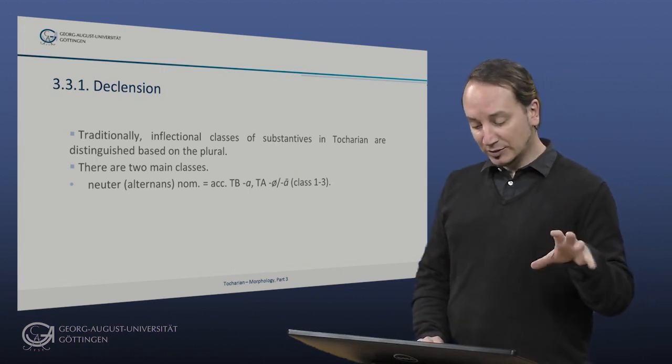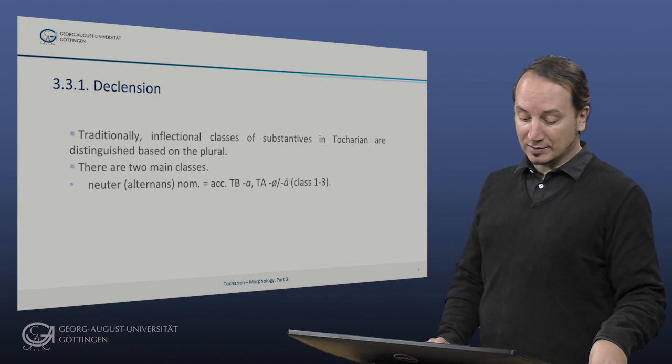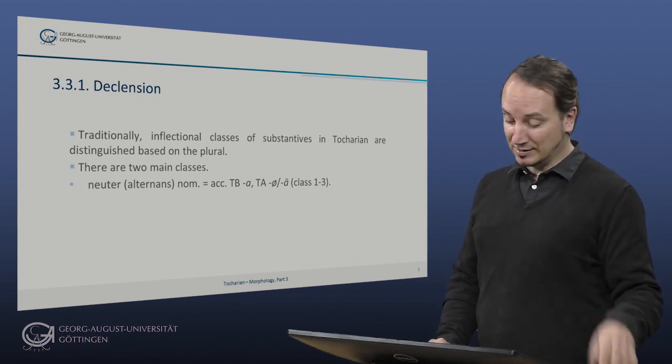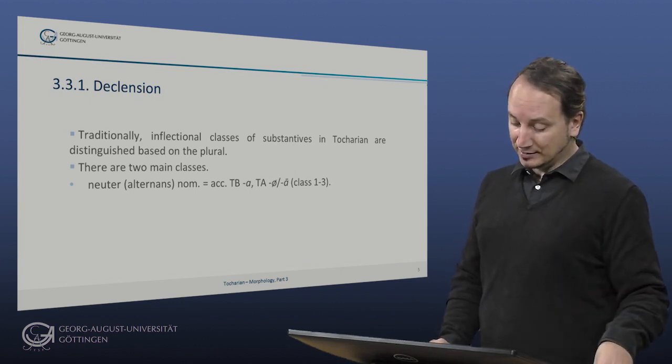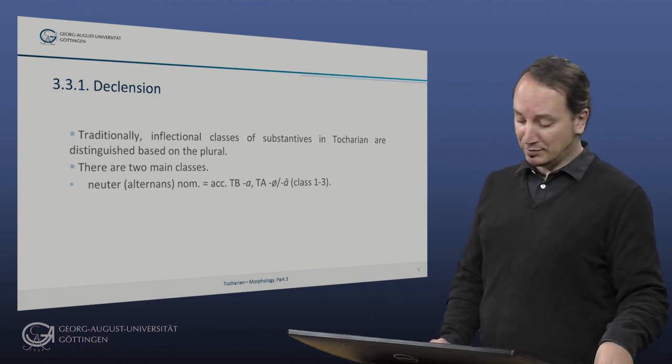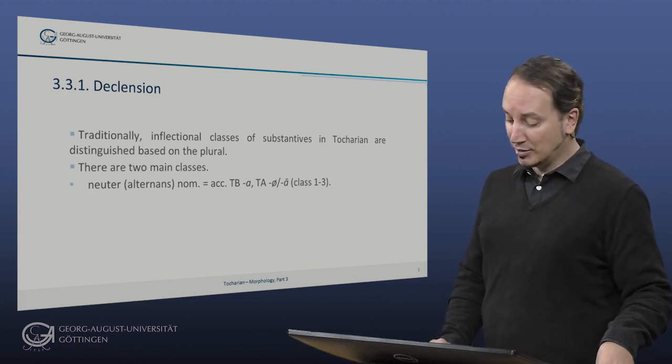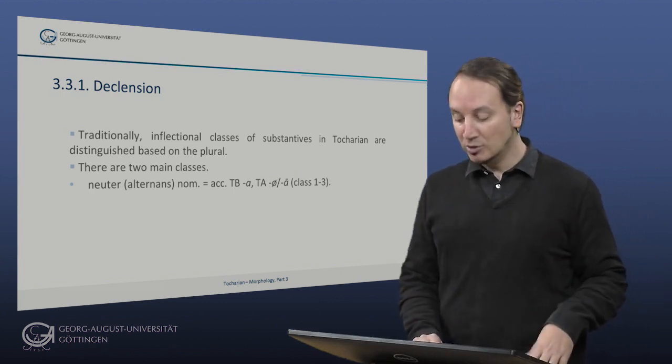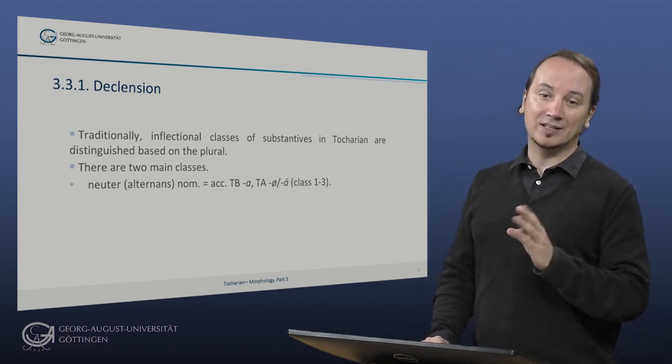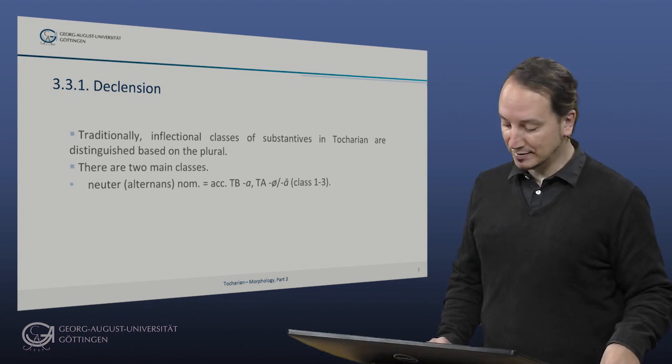So this class is characterized by that the nominative is exactly like the accusative in the plural, and it ends in Tocharian B -a, and in Tocharian A either zero or long ā. And these are classes one to three, as we will see in a minute.